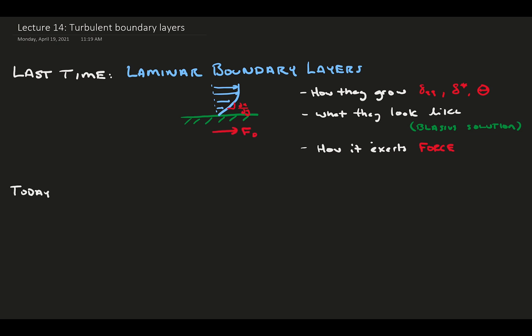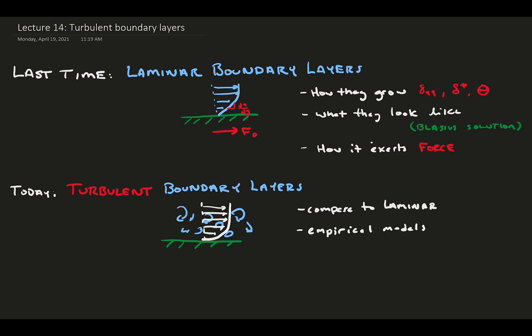Today we learn all about turbulent boundary layers. Once the flow is big enough or fast enough, meaning the Reynolds number is high enough, flow transitions to turbulence and becomes unsteady and chaotic in a mess of fluctuations. First, we'll compare the physical behavior of turbulent boundary layers to their laminar counterpart.